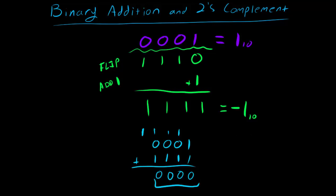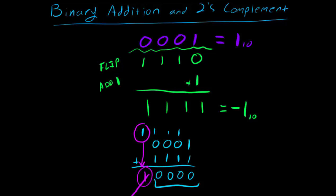You might have noticed that an extra 1 got carried, making the full result technically 1 0 0 0 0. But our computer only supports 4 bits at a time, so we have to be careful when adding — a result might get too big for 4 bits to store. The reason it's okay to throw out that extra bit in this case is that the last two carry bits were the same. If they were different, we would have had a problem.